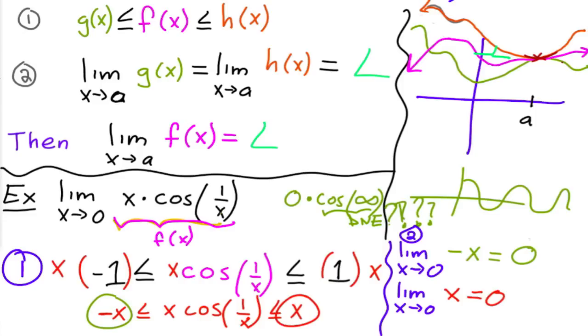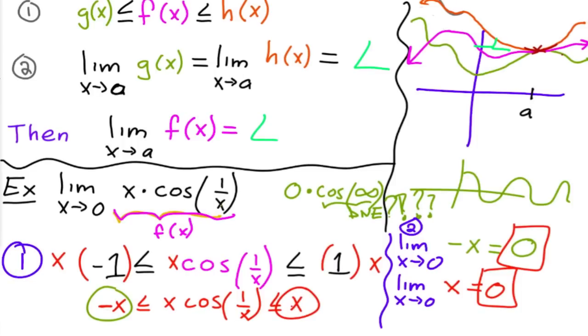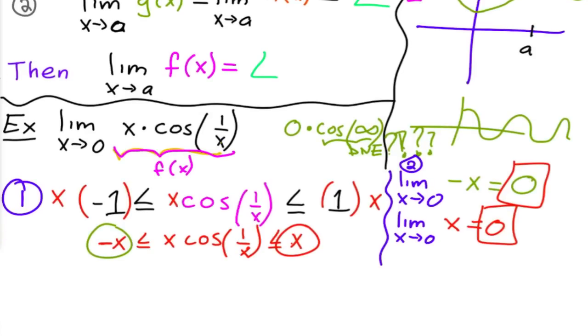Because these two are equal, and we know that our function is always between these two functions, then what we can conclude is that the limit as x approaches 0 of x times cosine of 1 over x is also equal to 0.